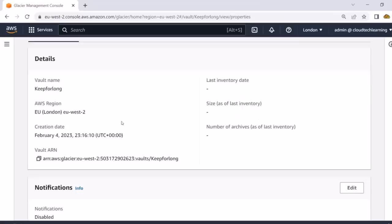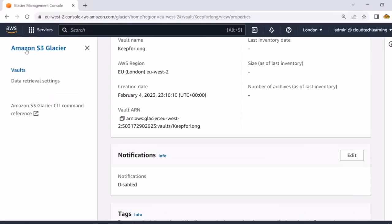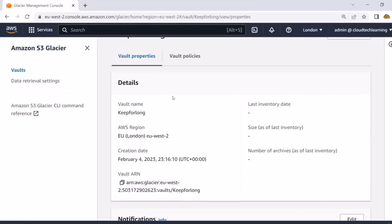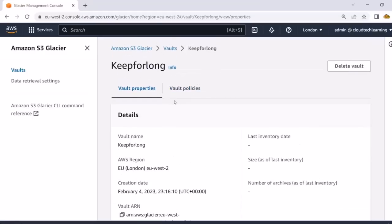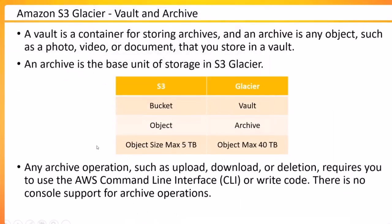If you look at the vault, there are not a lot of properties or options associated with it. You can create a vault from the command line as well as the console, but the rest of the operations related to archives — like uploading, downloading, deleting — require CLI access or writing code through the API. The console does not directly give you an interface to upload an object into Glacier; you need to use the CLI or write your own code. I'm providing a reference here for Amazon S3 Glacier with CLI.